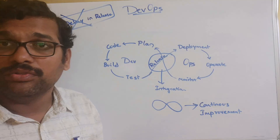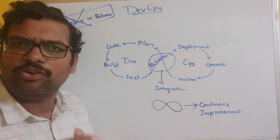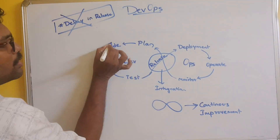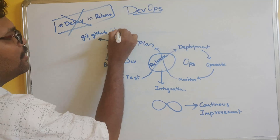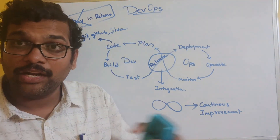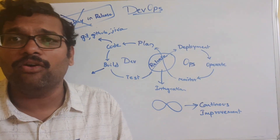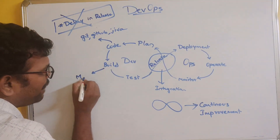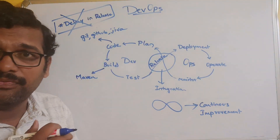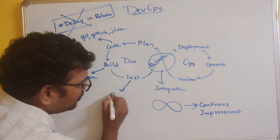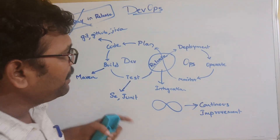Everything in DevOps is automated using different tools for each phase. For the planning phase, requirements are collected from all stakeholders. For coding, tools like Git, GitHub, or Jira are used to collaborate code from multiple developers. For the build phase — compiling and creating executable files — Maven is used. For testing, the most popular tools are Selenium and JUnit for functional testing.